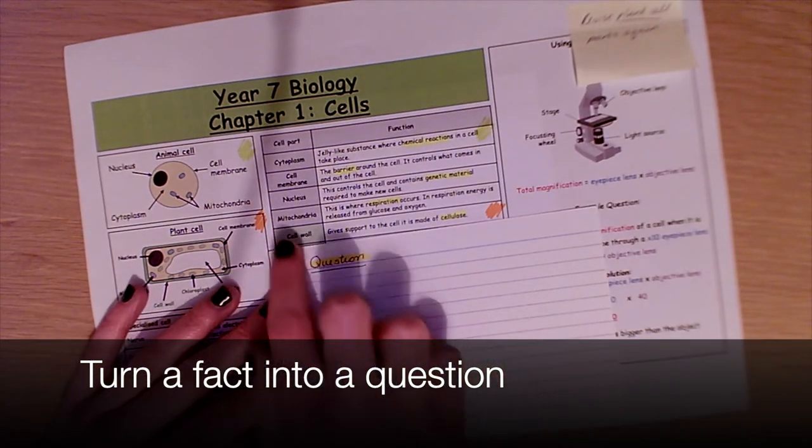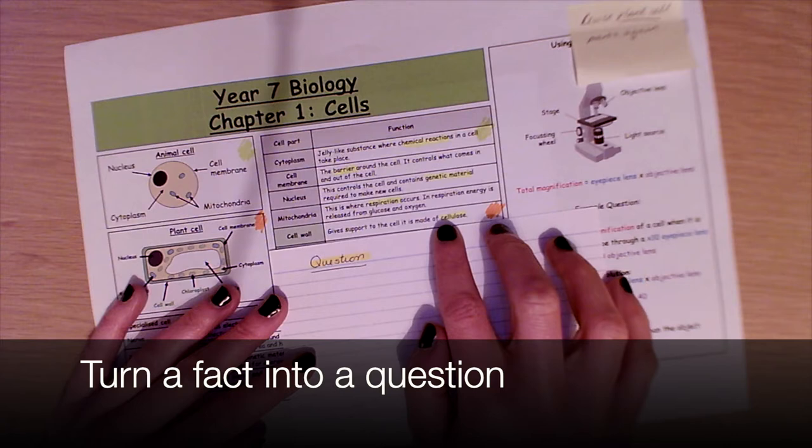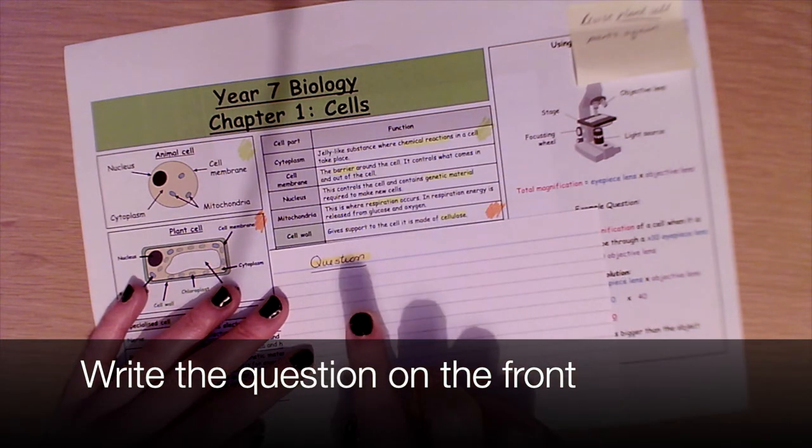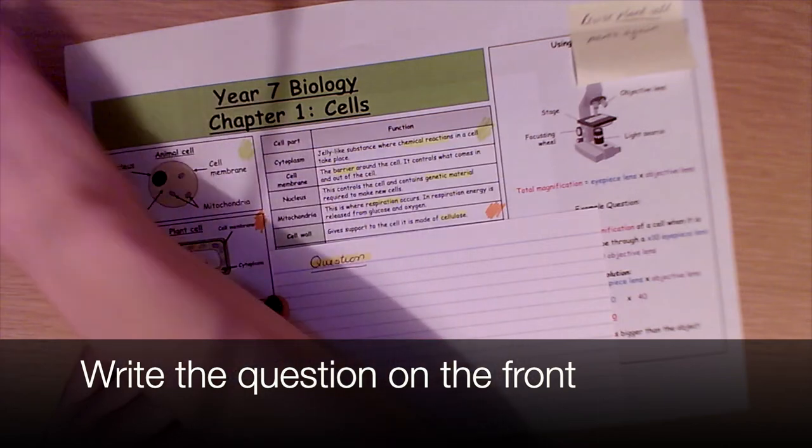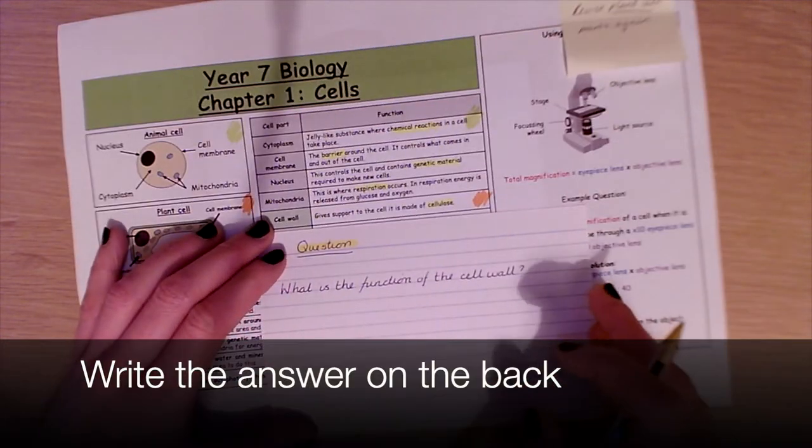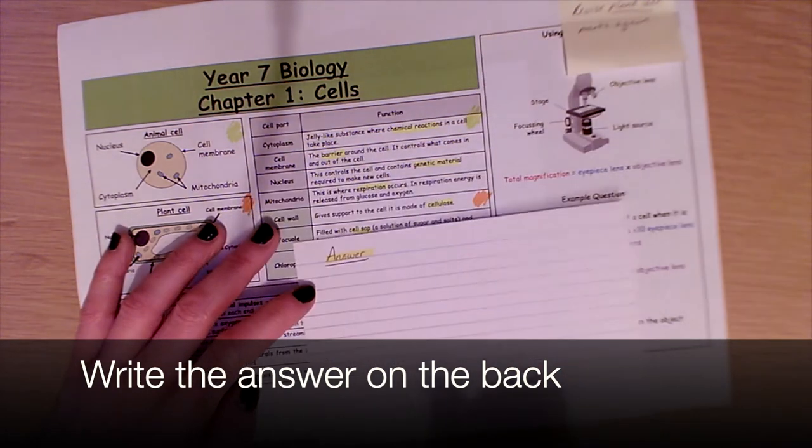Turn a fact into a question. For example, what is the function of the cell wall? Write the question onto the front of your flashcard. Once you've written the question on the front, write the answer onto the back.